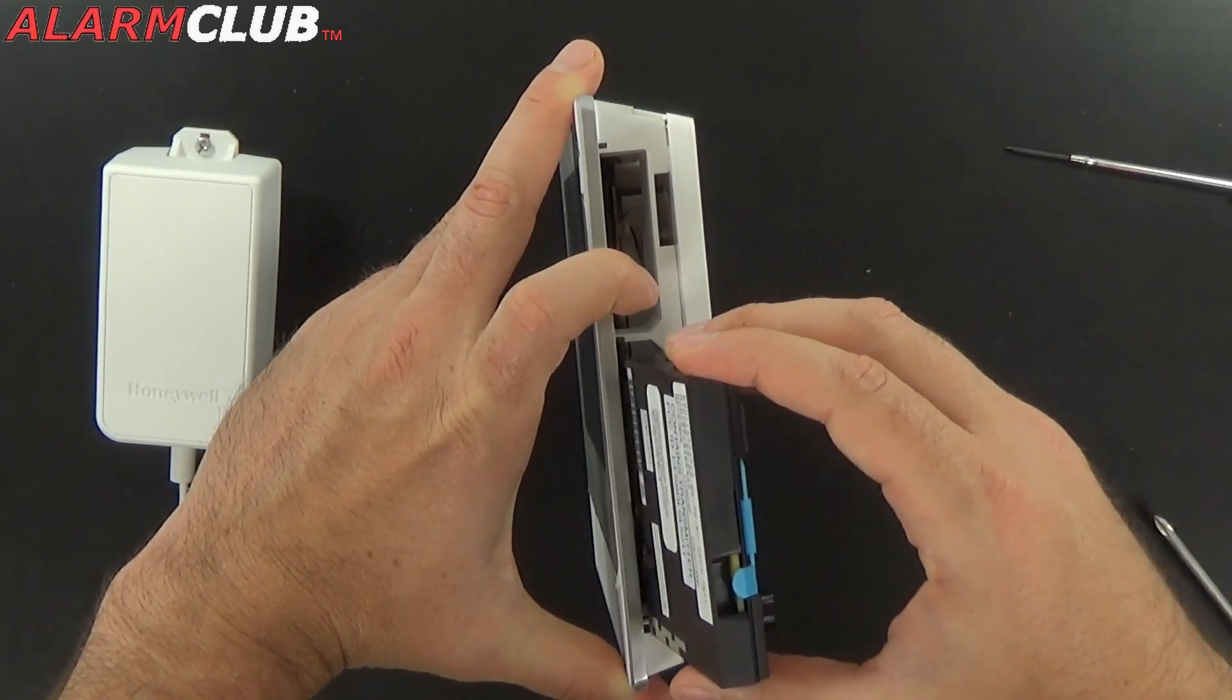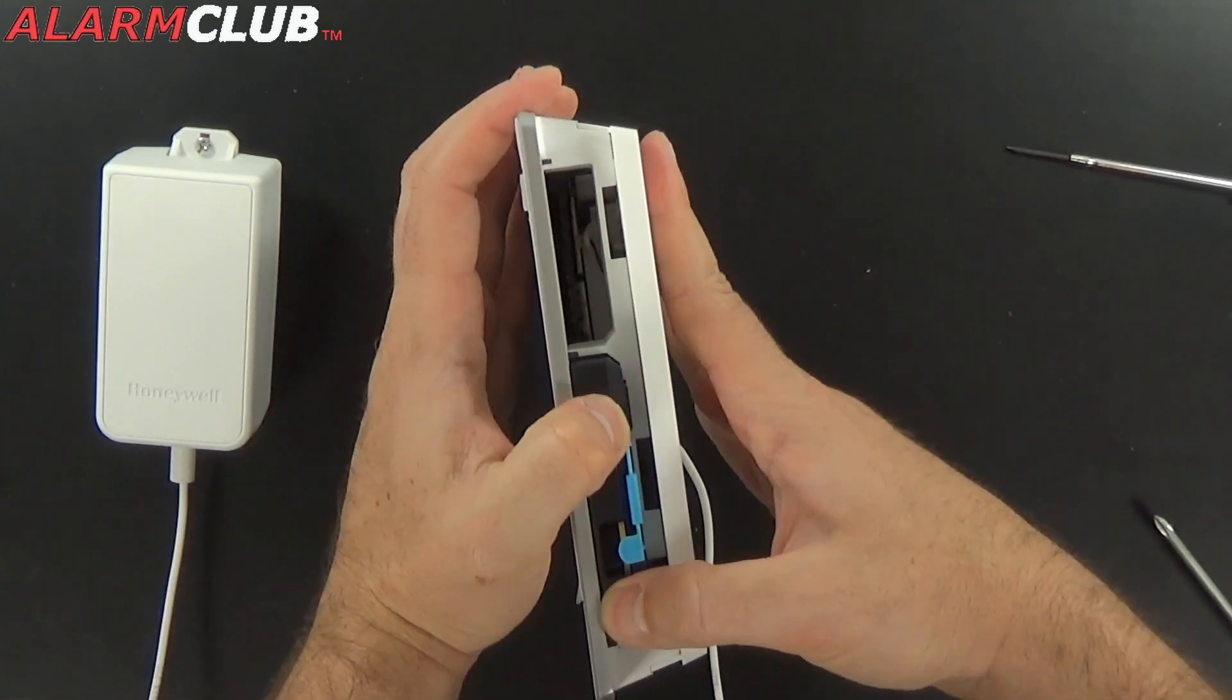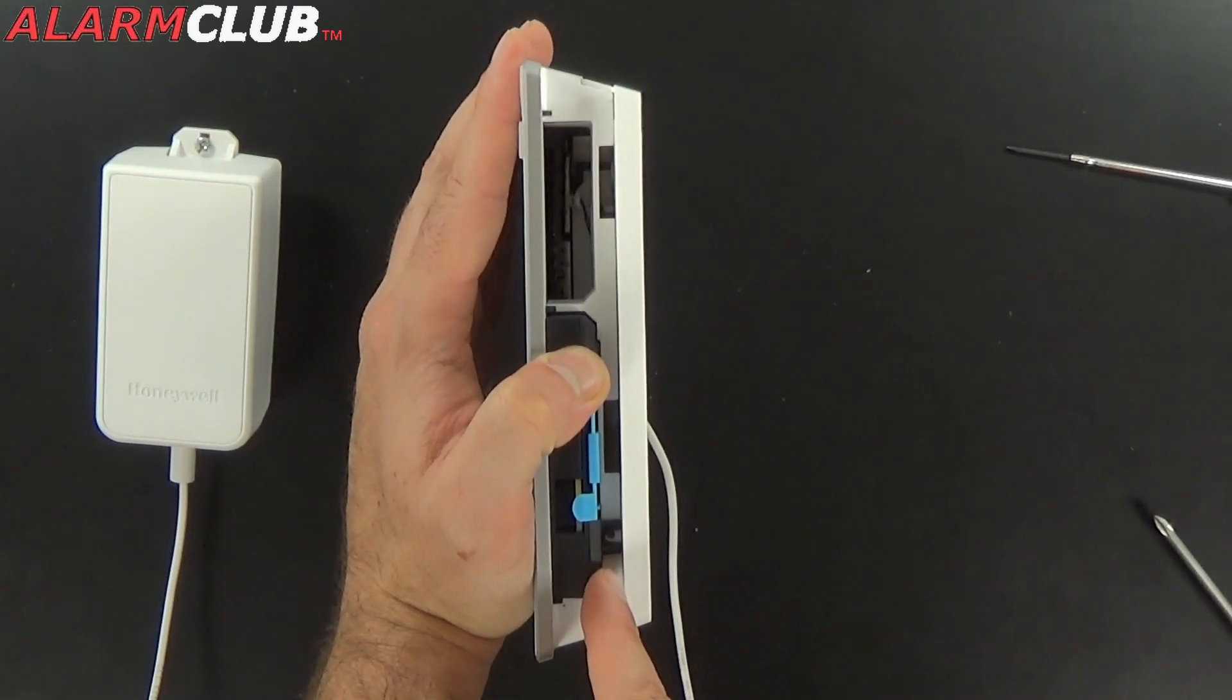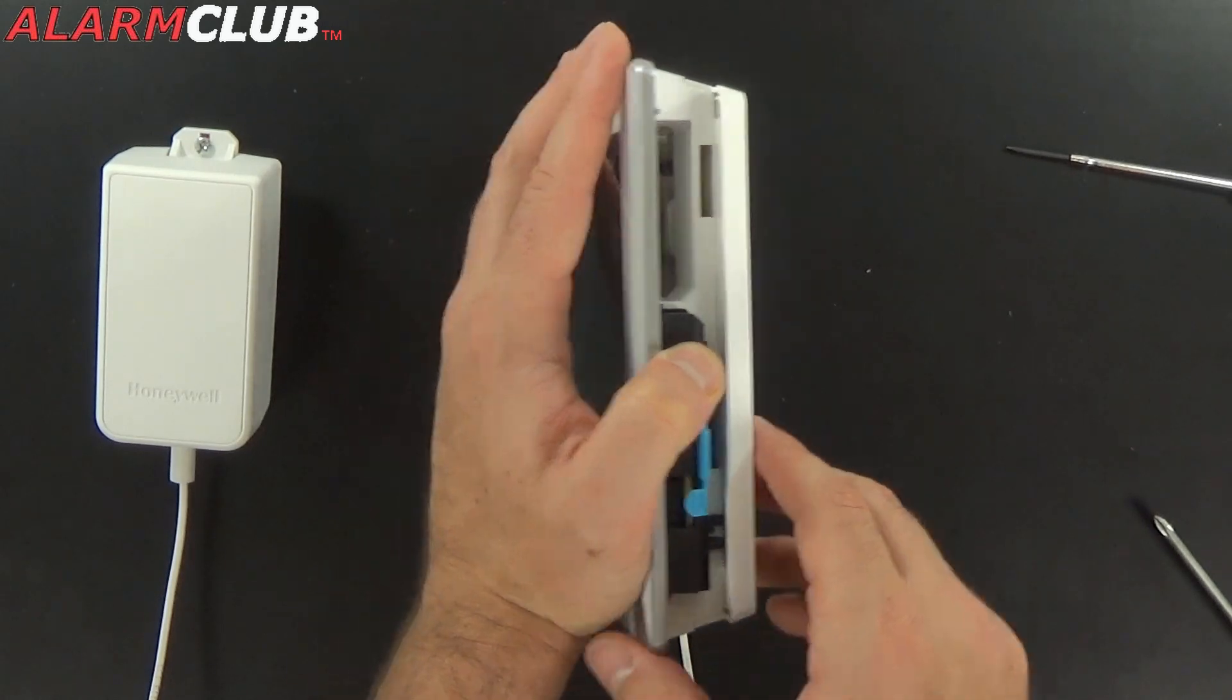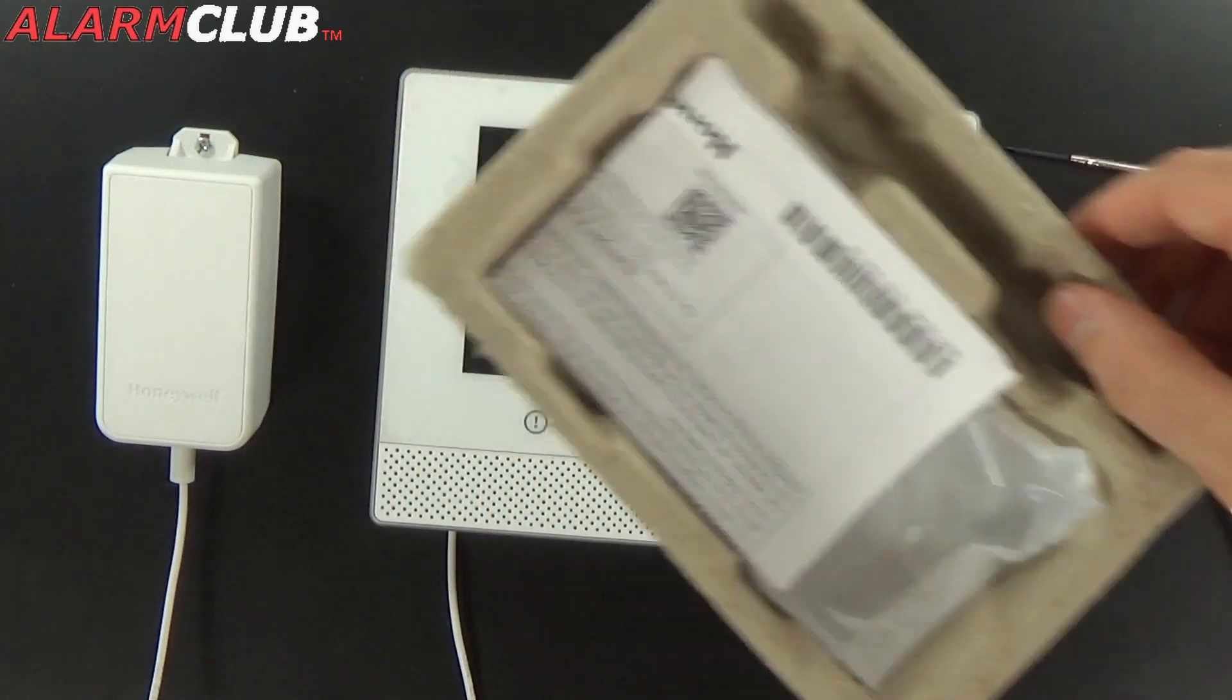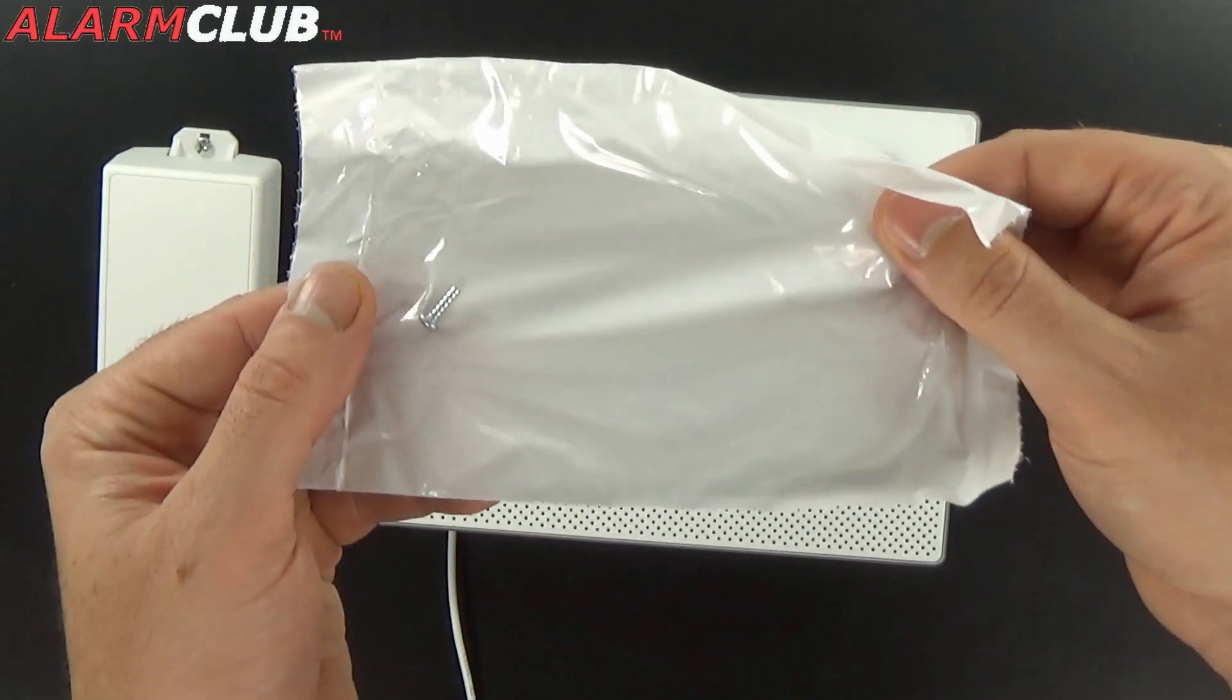Again with nothing plugged in including the backup battery not installed. Take your cellular module. Go ahead and slide it in until it clips into place. And you'll notice right here there's a little screw that you're going to want to insert to secure this into place. And you will find that back in the cellular communicator box. It does look like this. It's just a single screw.